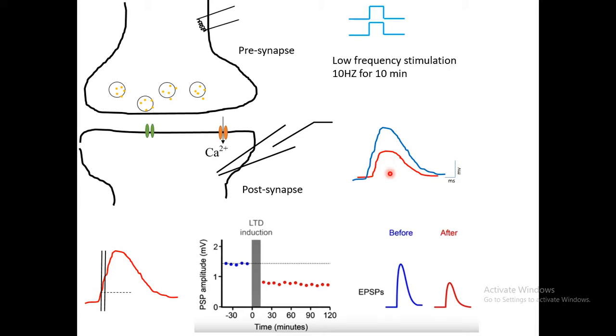Another way of showing this data is to calculate the slope and plot the slope over time. If it is lower than the baseline, that suggests the synaptic strength has been altered.